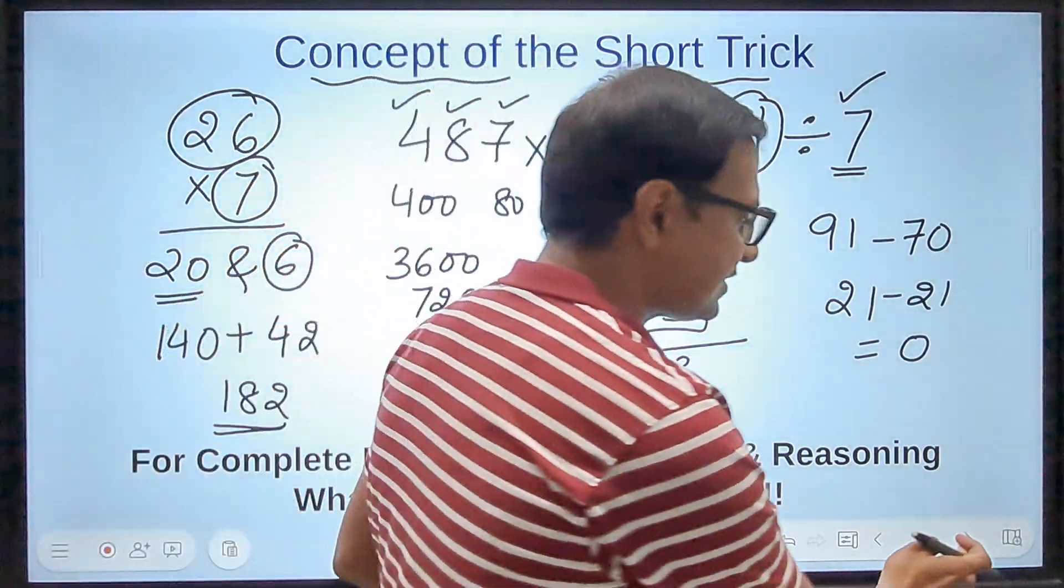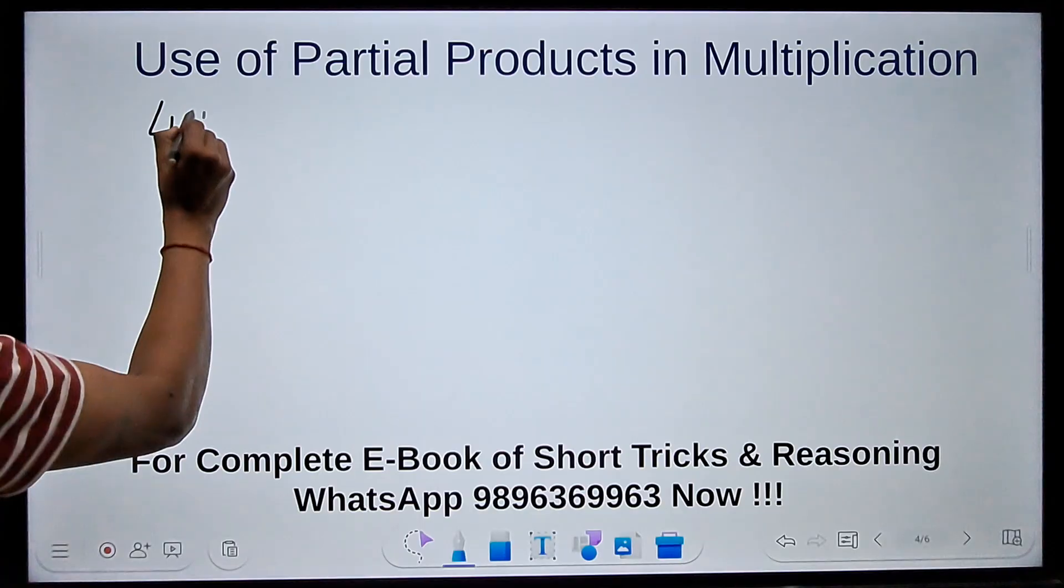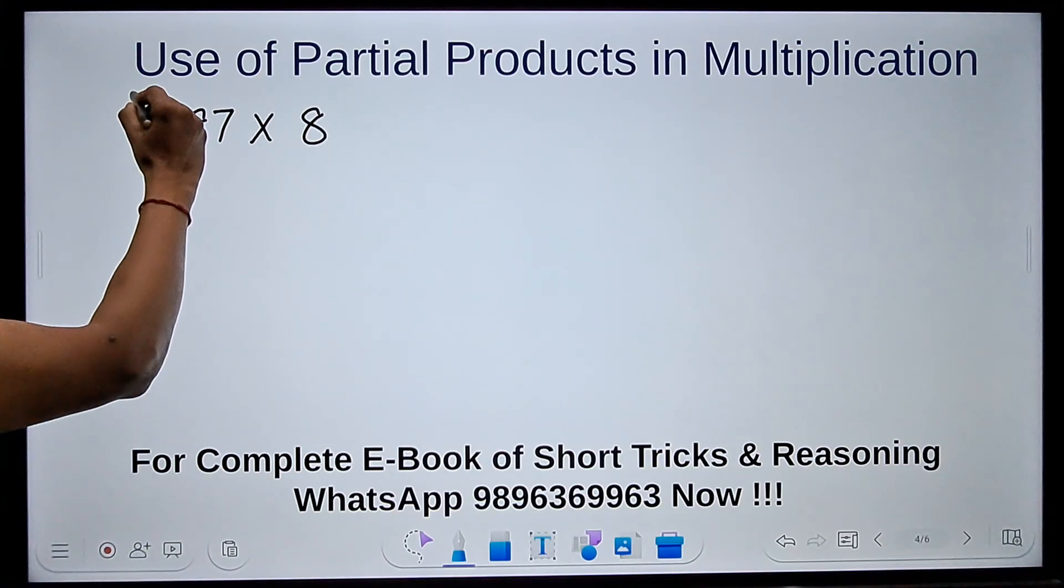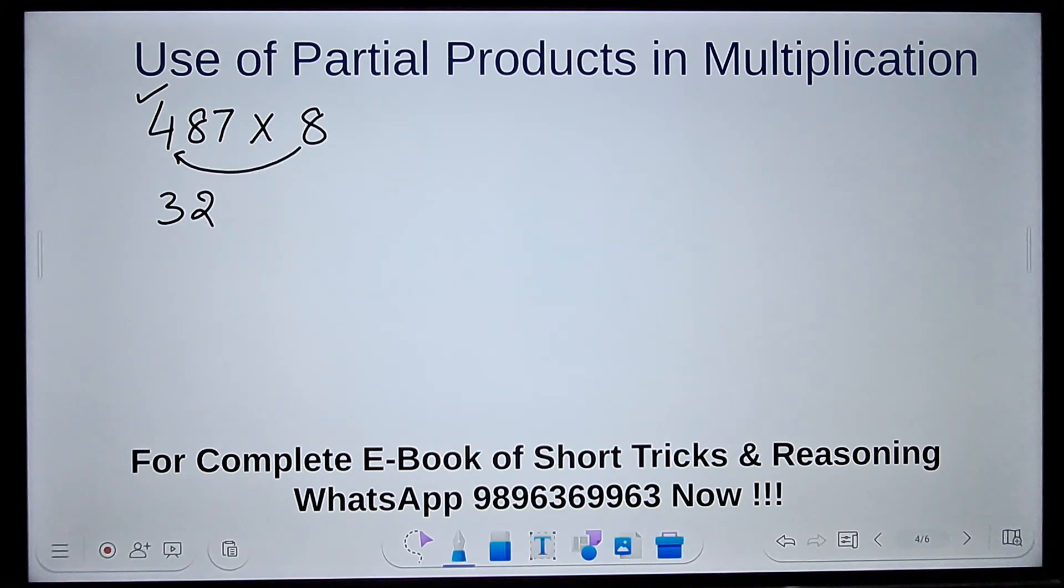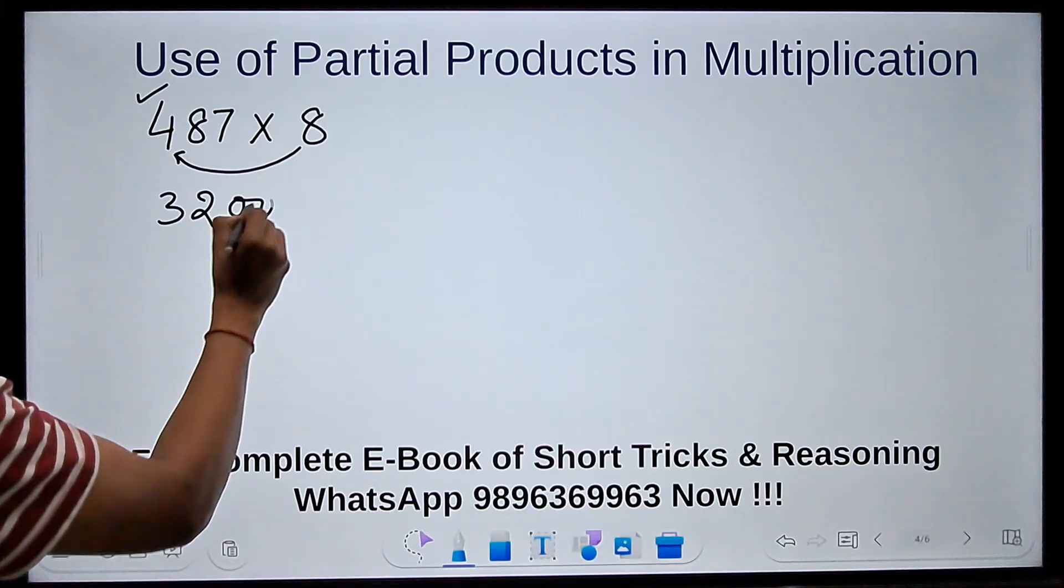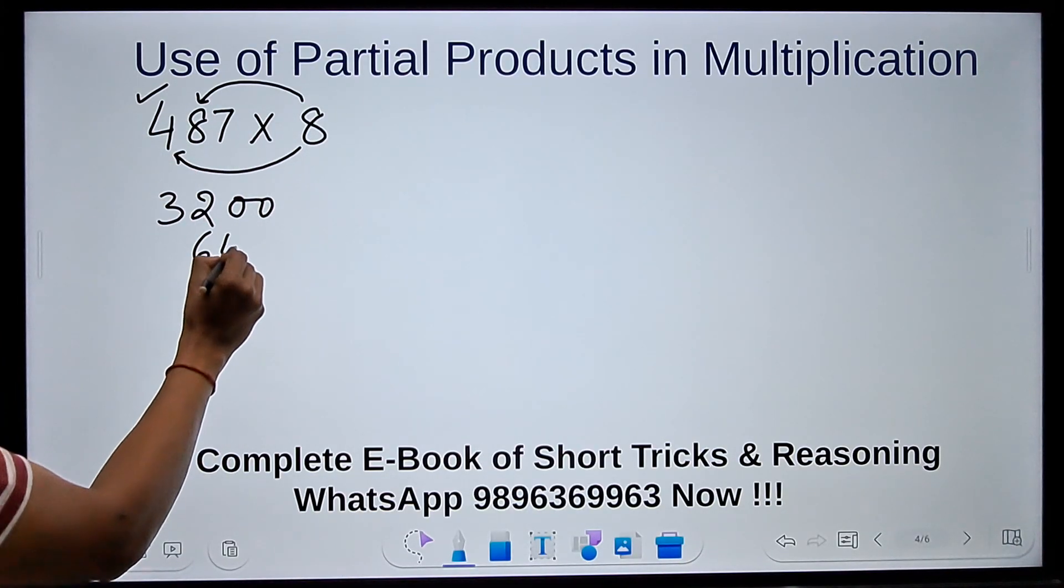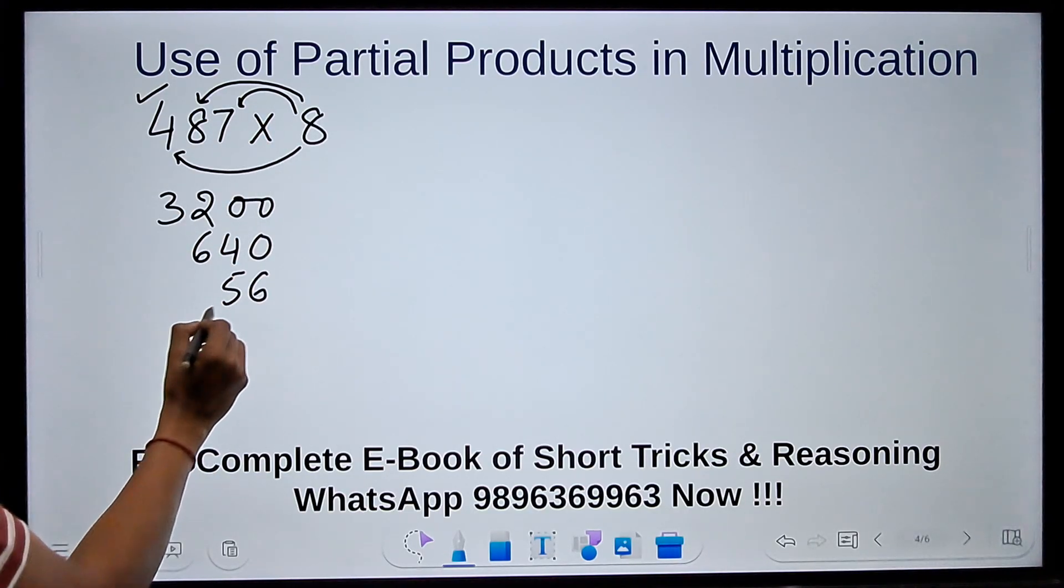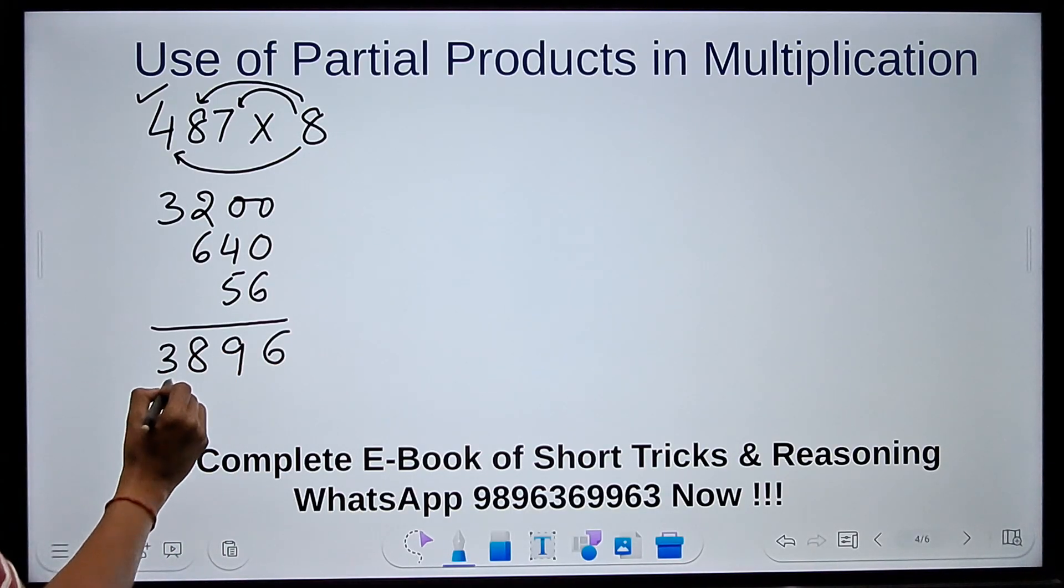Here we have the first example in which I'm going to take up the product of 487 by 8. So 8 times 4 is 32, and since 4 lies in the hundreds place, I'll put two zeros. 8 times 8 is 64, and it's in the tens place, so 64 followed by a 0. And 8 times 7 is 56. I'll write them here and then 6, 9, 8, 3—3896 is the product of 487 and 8.